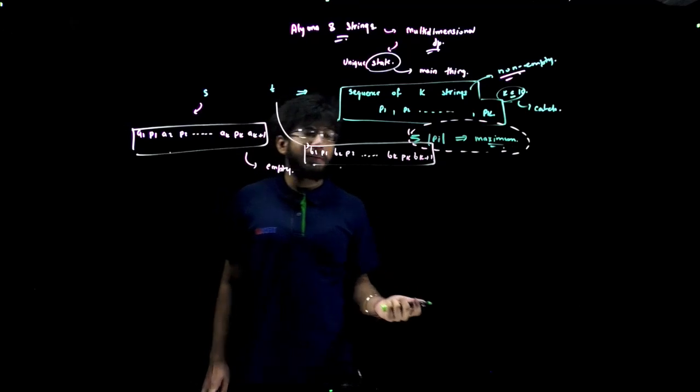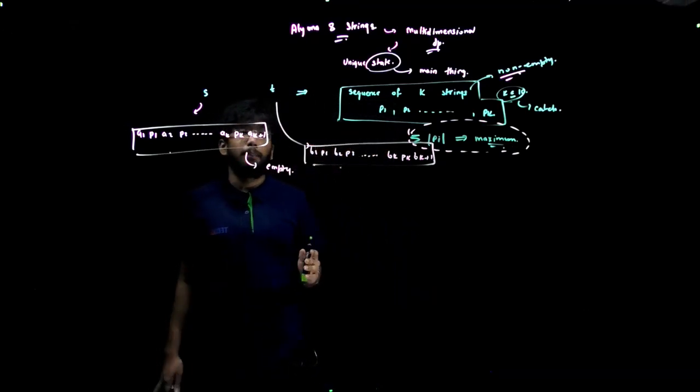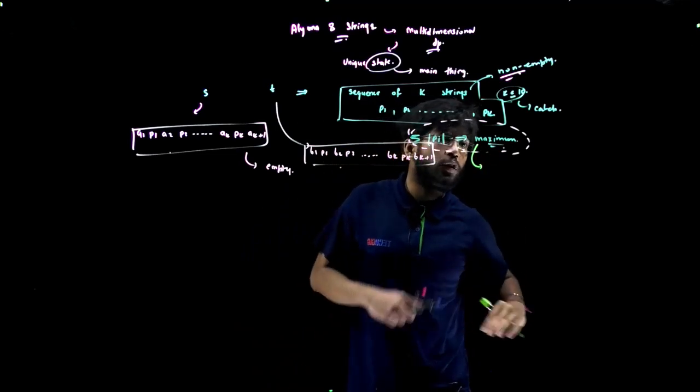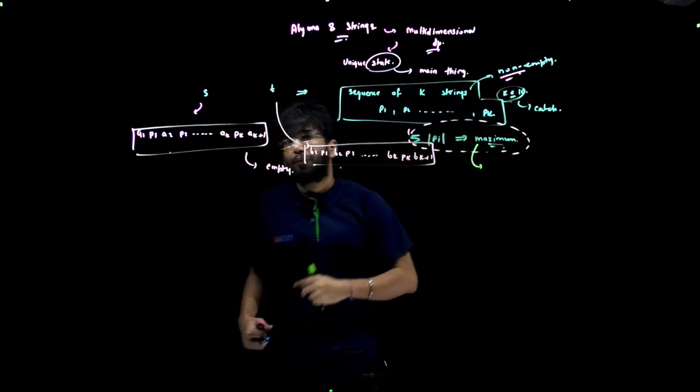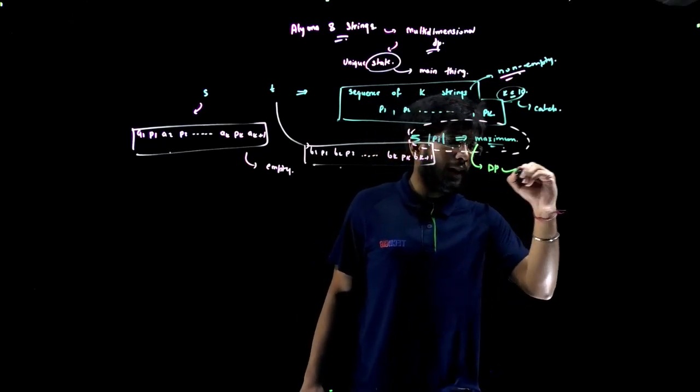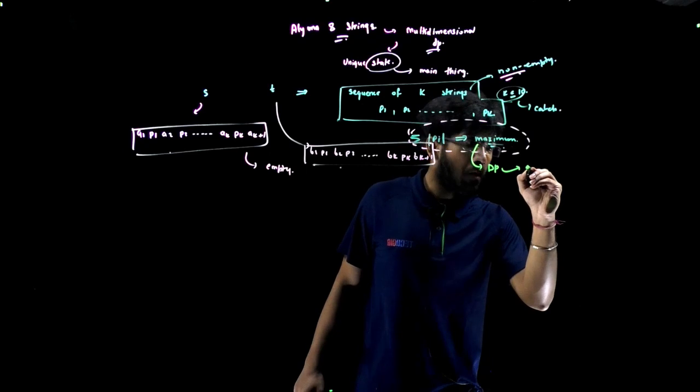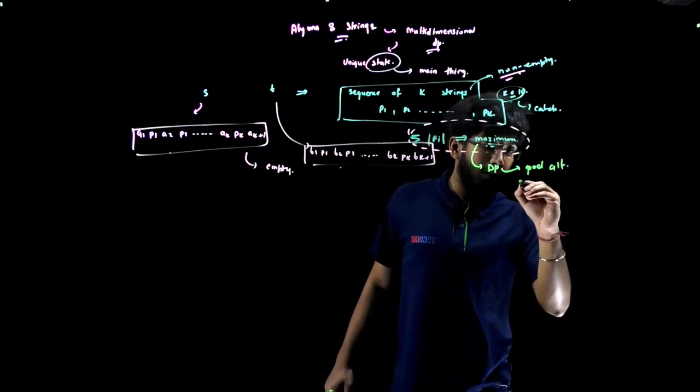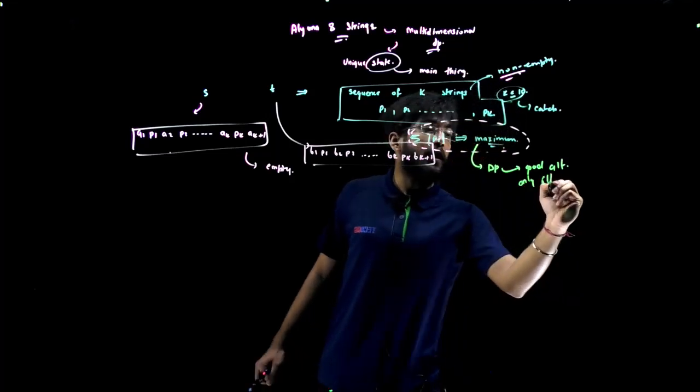Once you are clear with the problem statement, you need to think of a unique state in the DP. DP is very useful in the cases of maximization, minimization, and finding out the number of ways. DP is a good alternative to solve this question, or maybe the only alternative to solve this question.